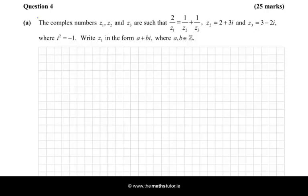Hello there. In this question, we're given three complex numbers z₁, z₂, and z₃, and we're given an equation where 2 over z₁ is equal to 1 over z₂ plus 1 over z₃. We're told the value of z₂ and z₃, and we have to find z₁ and write it in the form a plus bi.